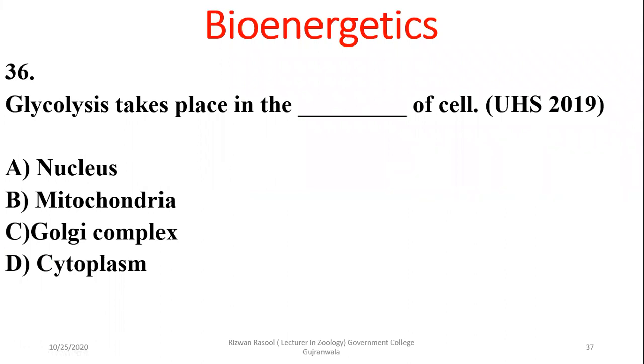Question 37: Glycolysis takes place in the cytoplasm of the cell. The right option is delta.